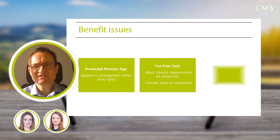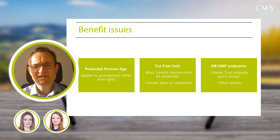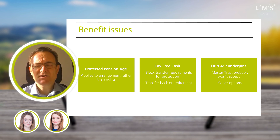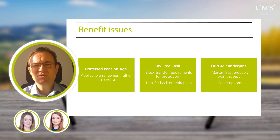The third benefit issue is DC members who have an underpin to their benefit — the most common scenario being members who were contracted out with guaranteed minimum pensions but have DC benefits generally, so they have a DC pot with an underpin equal to their GMP. As a general rule, a master trust provider will not accept these sorts of benefits. One option is to leave them in your existing scheme, but if the reason for transferring was to escape DC governance obligations, you may find you still have to carry out all that governance. An alternative worth looking at is buying out those underpin benefits with an insurance company.